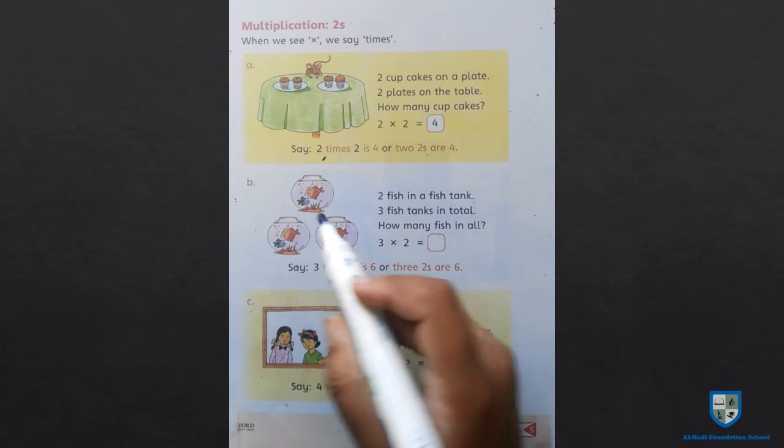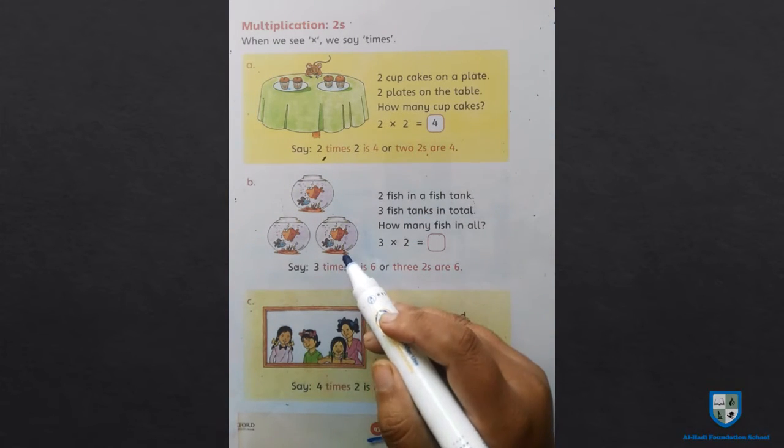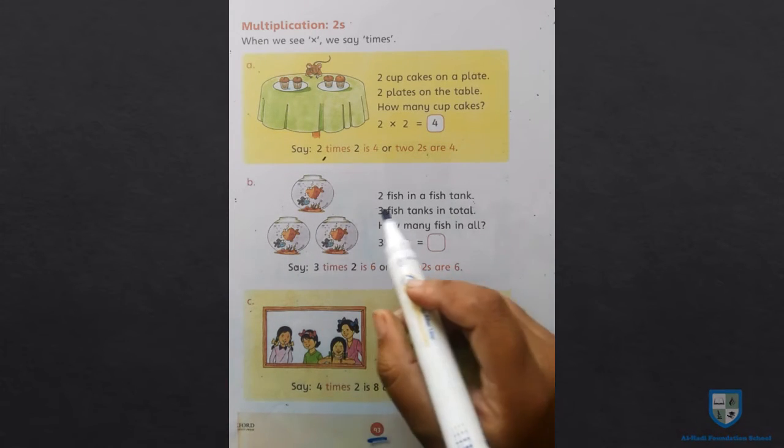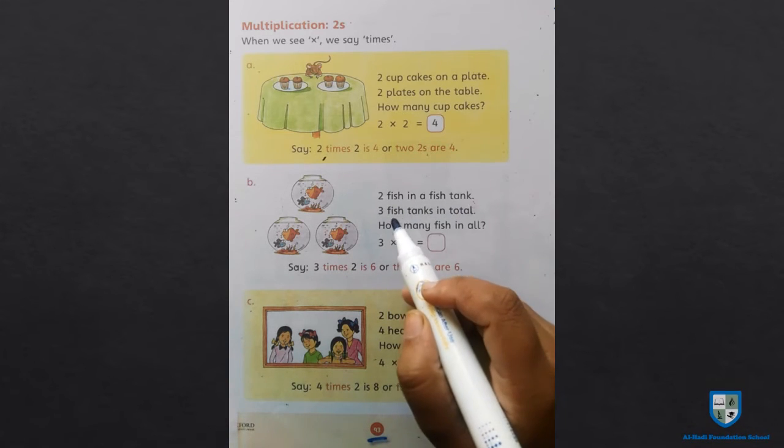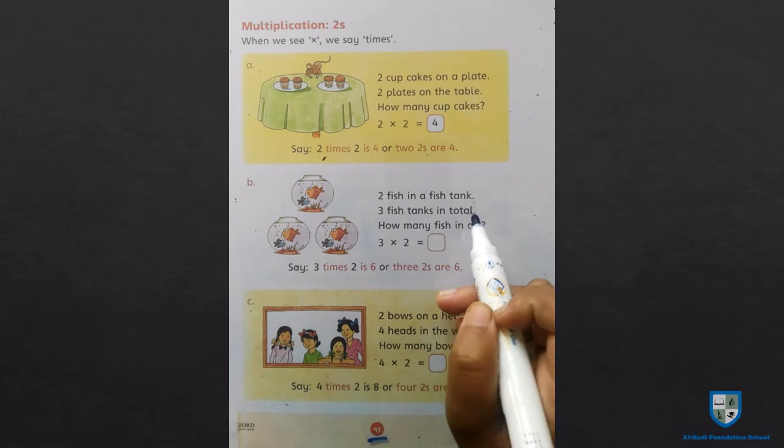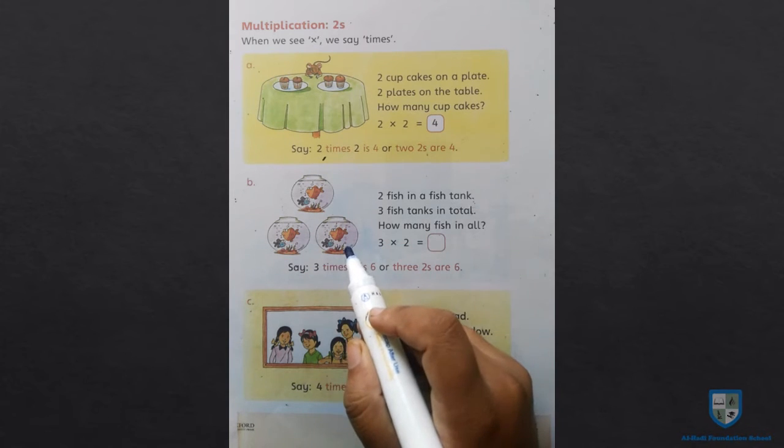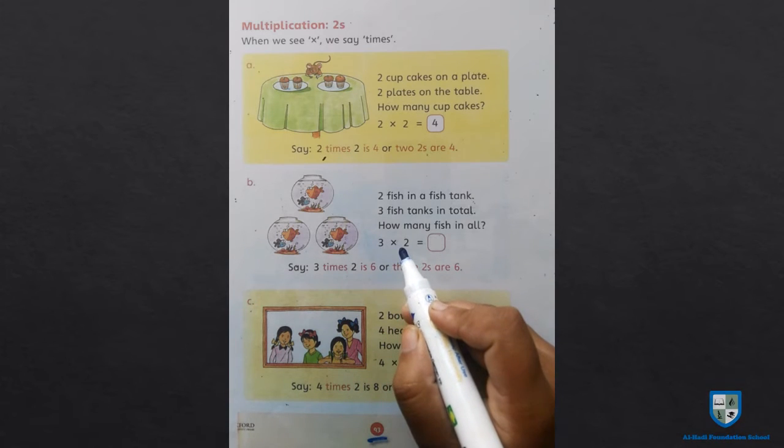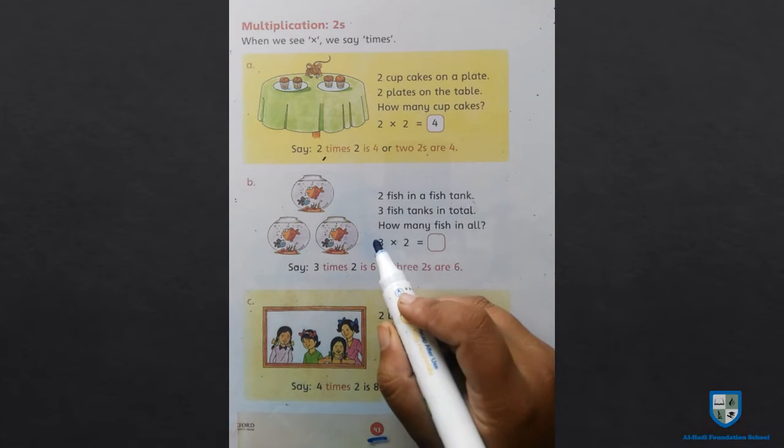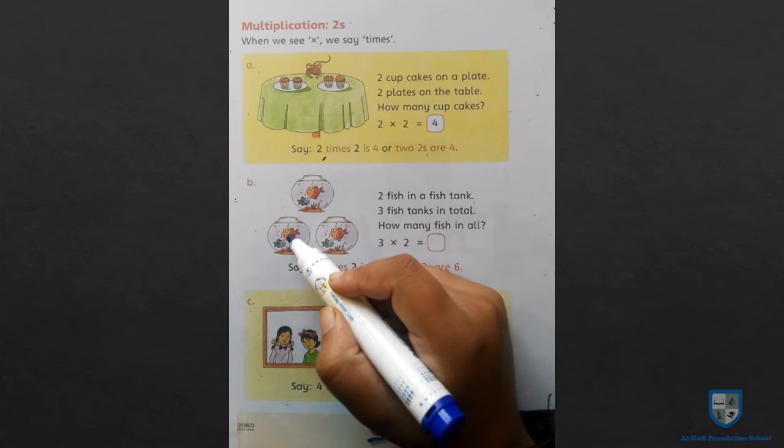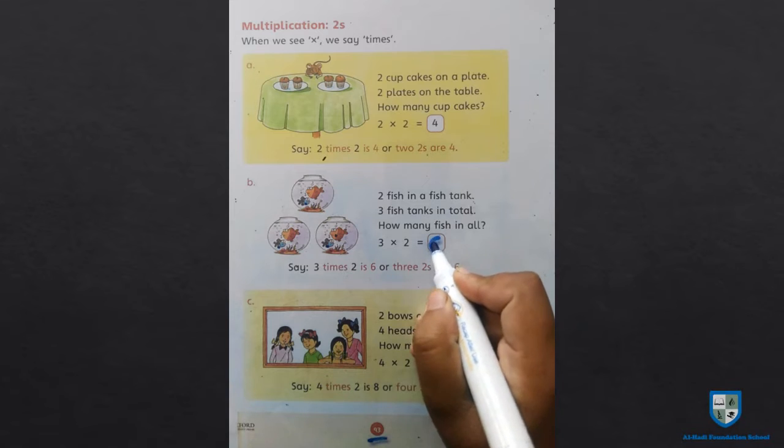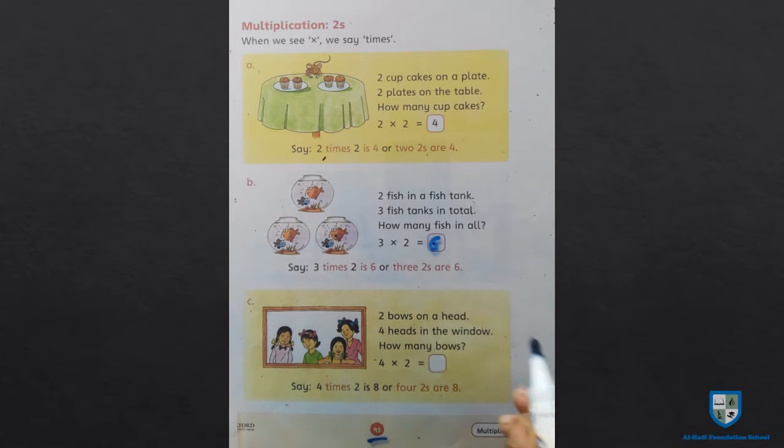Now we have to see how many fish there are. 1, 2, 3, 4, 5, 6. 3 twos are 6. 3 times 2 is 6, and 3 twos are 6. Next, see...